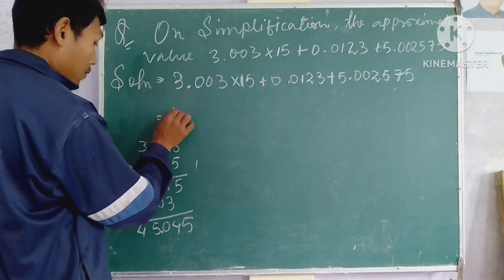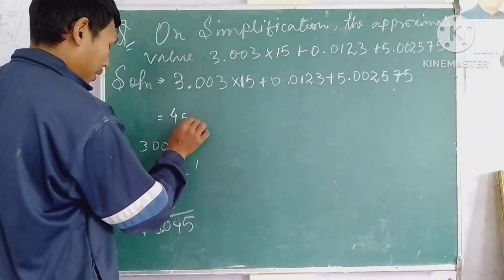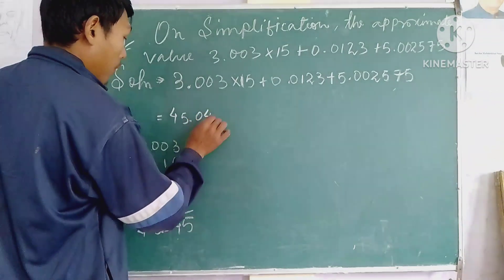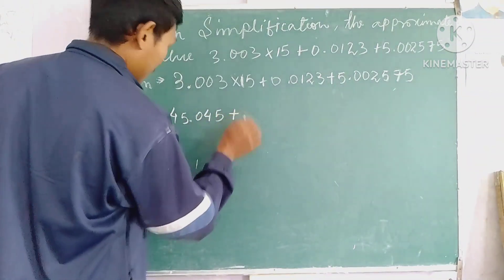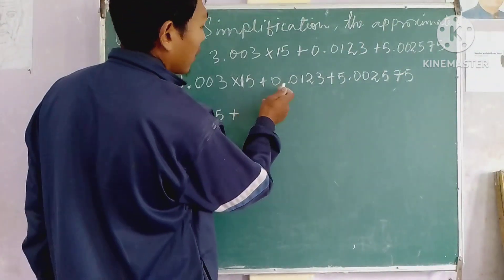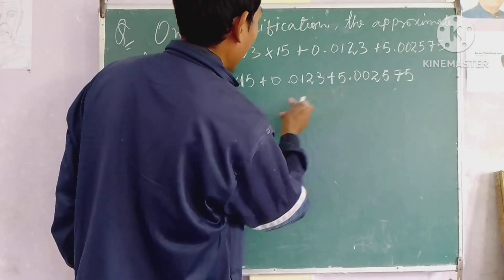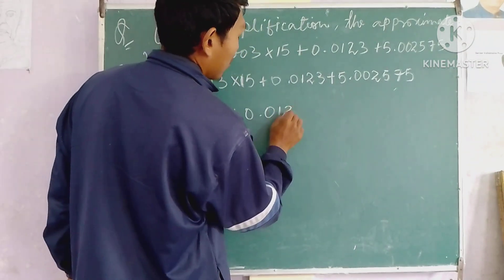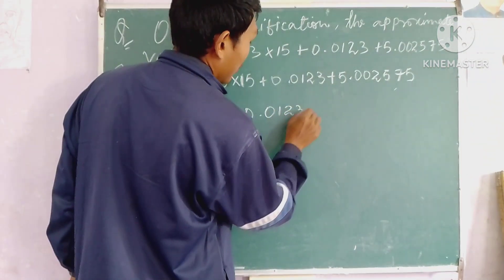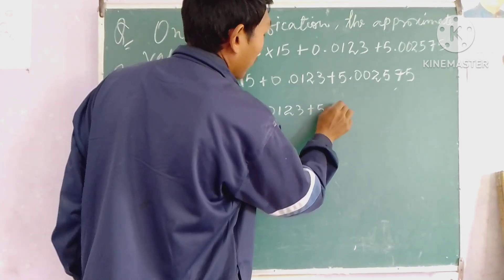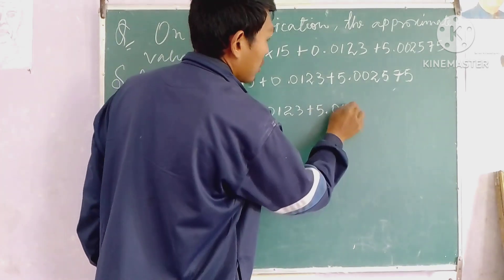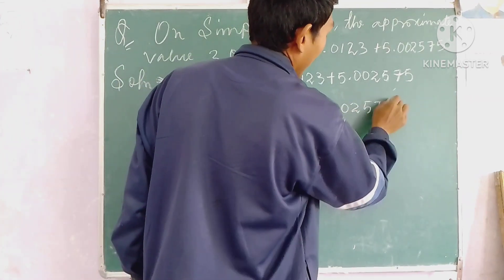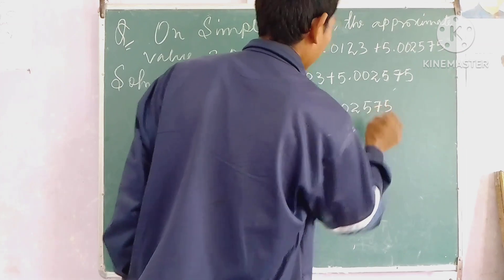So, 45, 0, 4, 5, plus, 1, 2, 3, plus, 5, 0, 0, 2, 5, 7, 5.